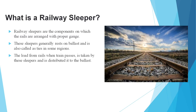The question arises: why choose plastic sleepers over other sleepers? Because they have a long life, are eco-friendly, have the greatest strength, and their scrap value is very good in the market. Railway sleepers are the components on which the rails are arranged with proper gauge. These sleepers generally rest on ballast and are also called ties in some regions. The load from the rails when a train passes is taken by these sleepers and distributed into the ballast.